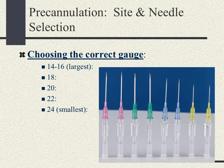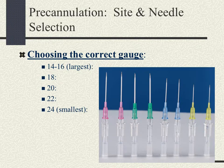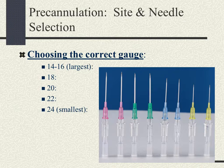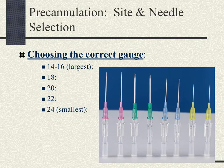In choosing the correct gauge: 14 to 16 gauge — the largest — is used for multiple traumas, heart surgery, transplants, and when large amounts of fluid are needed, such as in hypovolemic shock. 18 gauge is for major trauma or surgery and blood administration. 20 gauge is for minor trauma or surgery and blood administration. 22 gauge is for small veins and administration of platelets and plasma — avoid with blood. 24 gauge is the smallest and used mainly in the pediatric setting.